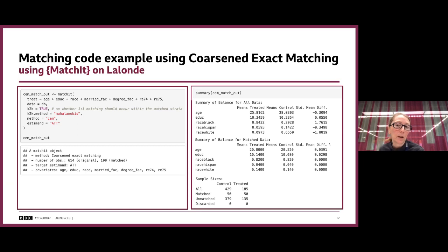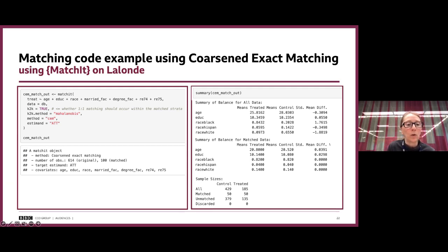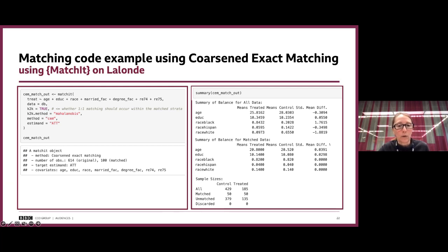Here's an example using coarsened exact matching (CEM). For continuous variables, CEM creates breaks — for example age groups — and then matches exactly on those categories. Jumping to the balance check, my matched data now shows a perfect 82% on each side. However, that came at the expense of discarding many treated units: we were only able to match 50 treated to 50 control.